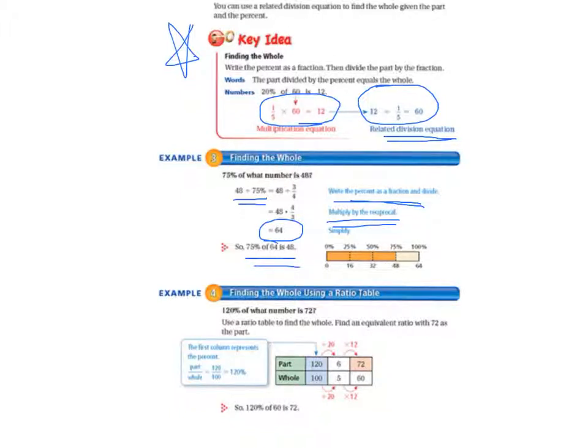Example four, we're going to find the whole using a ratio table. 120% of what number is 72? We use a ratio table to find the whole, and we find an equivalent ratio with 72 as the part. So the first column is the part and the whole, 120 over 100.